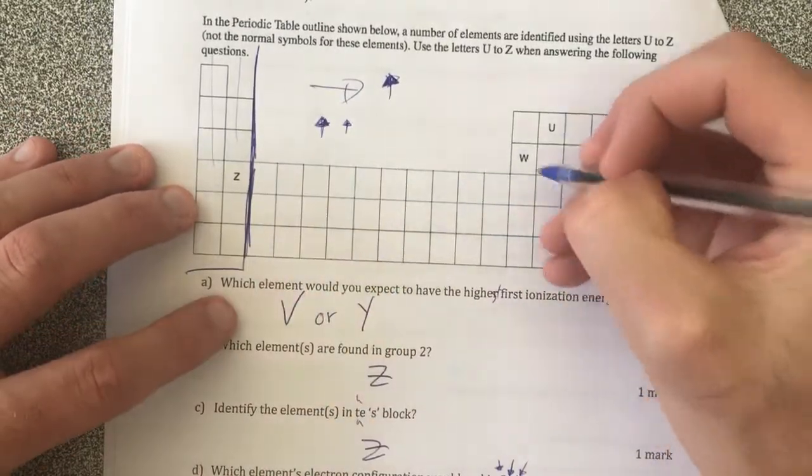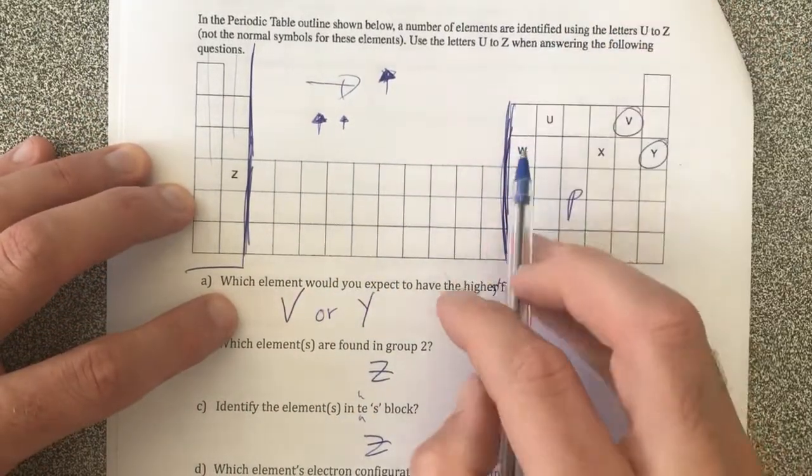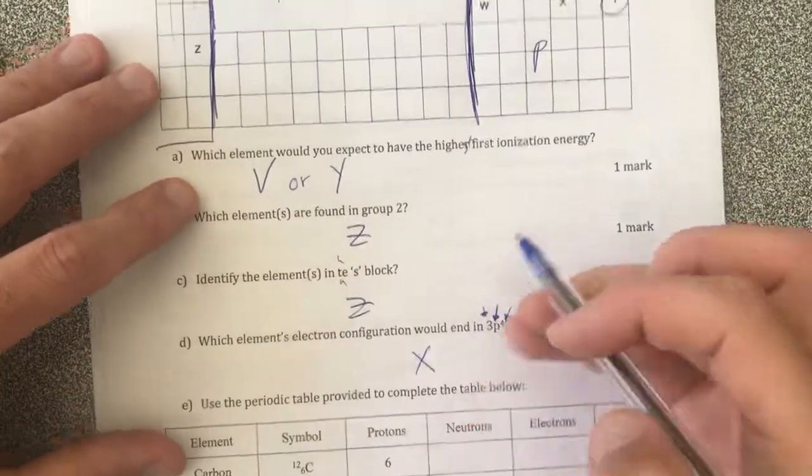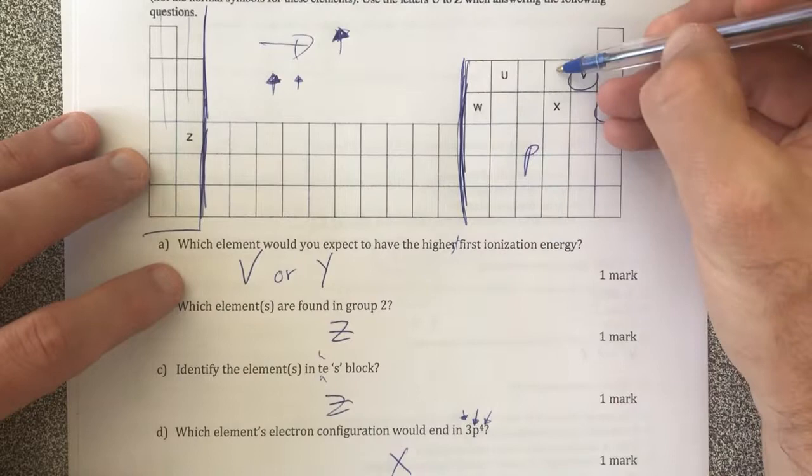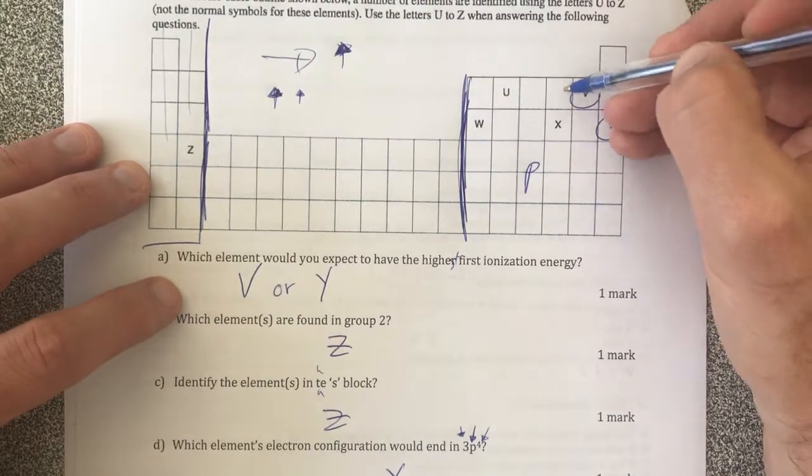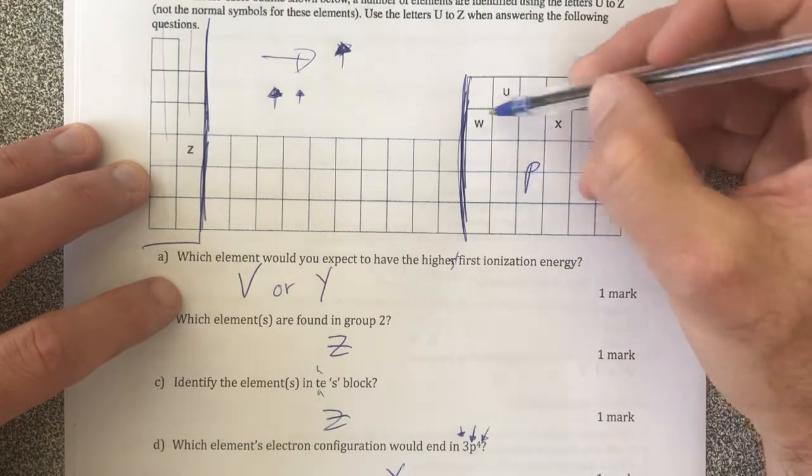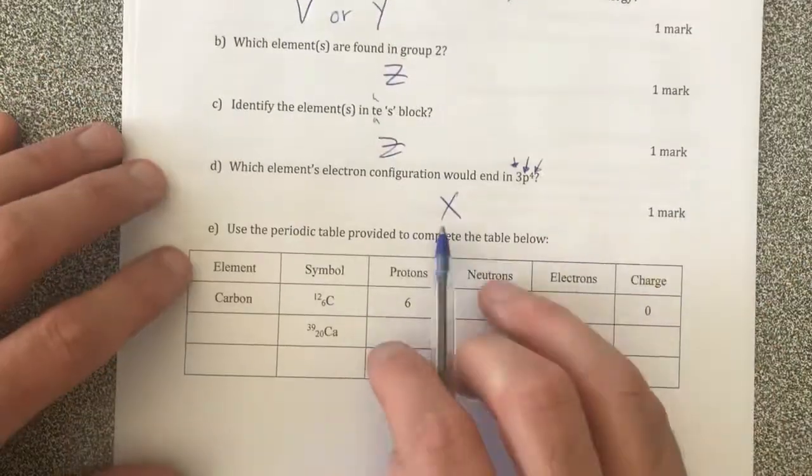So this is our P block here and we go 1, 2, 3, 4. So it should be X because this one should have three shells, not three full shells, and it should end in P4 because it is in the P block and it's the fourth element in. So element X should do that.